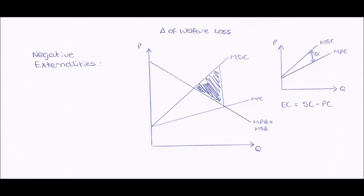Next we move on to negative externalities graphs. The graph shows marginal social costs and marginal private costs, both sloping upwards. The distance between these two lines is the external cost, so external costs equal social costs minus private costs. Drawing in the social benefits line sloping downwards creates a triangle where social costs are greater than social benefits — society is losing out, we experience welfare loss and market failure. This triangle is known as the triangle of welfare loss.